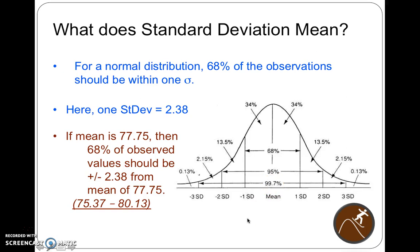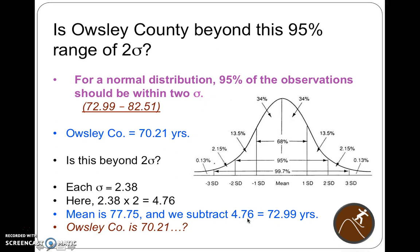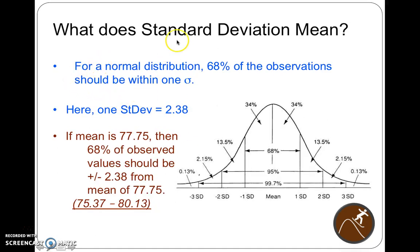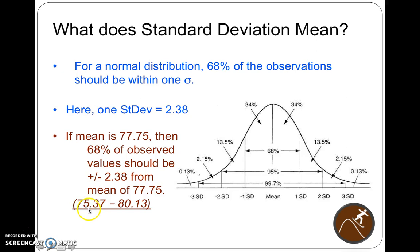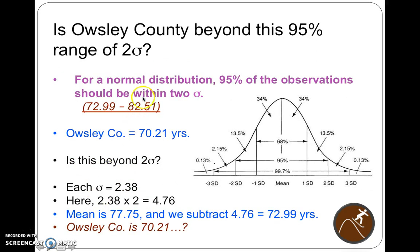We already know for one standard deviation it should go from 75.37 to 80.13. So put that 75.37 in your mind. That's one standard deviation below the mean. So I'm going to ask, is Owsley County beyond the 68% range, in the outlying 32%? For a normal distribution, 95% of the observations should be within two standard deviations. So 75 is the low number. Owsley County is 70.21, so it's definitely below 75. So what about two standard deviations?